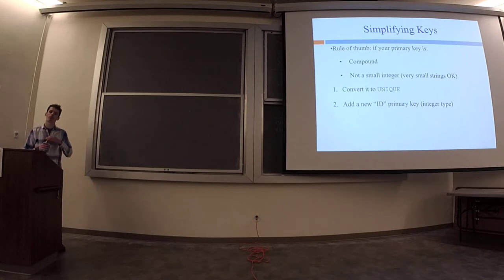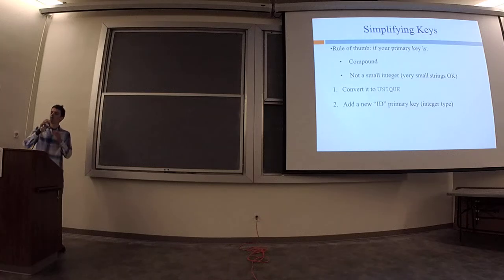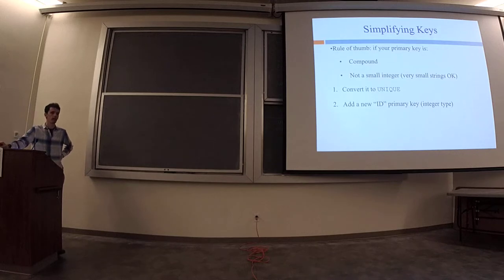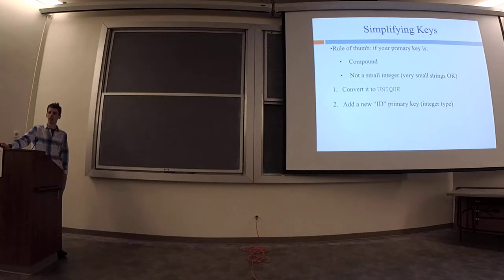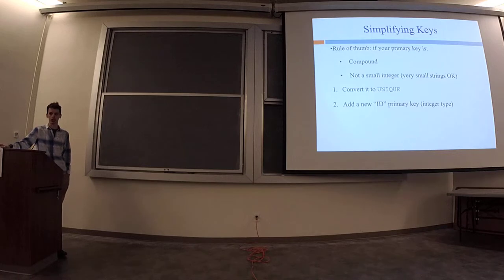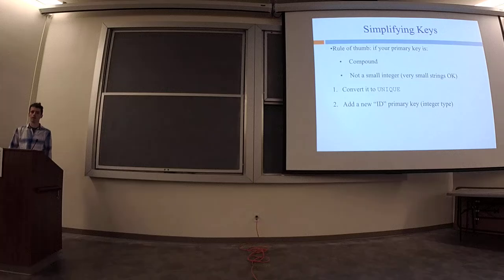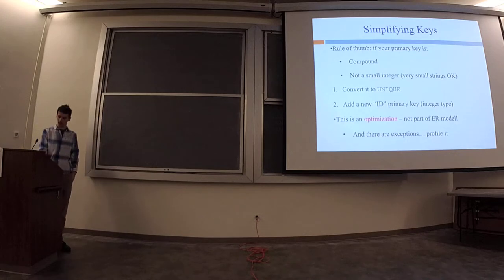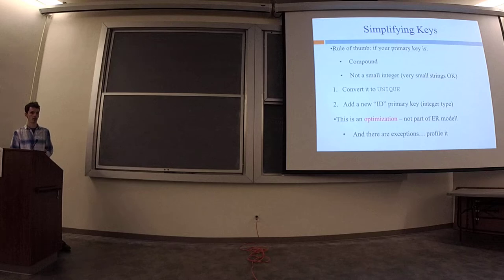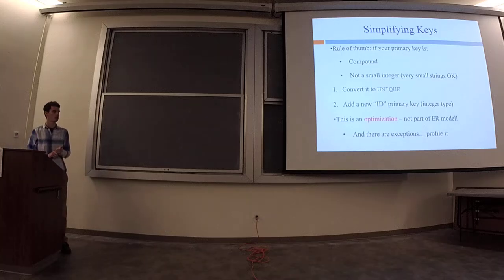The uniqueness constraint is enforced when you try to add something to the table. If you have a uniqueness constraint on long strings and try to add a new string, it does have to check that string doesn't exist anywhere in the table — but it's not a linear operation. It's logarithmic if there's a tree built on that column. Again, this is just an optimization, not for correctness. It's not part of the ER model, not even required in SQL — it'll just be a lot faster.